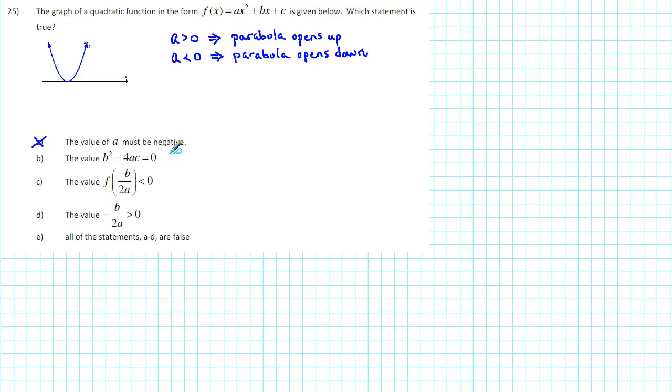To find the x-intercepts of a function, we let y, or f(x), equal 0, and then solve for x. So in our function, we're going to replace f(x) with 0, and then solve for x.